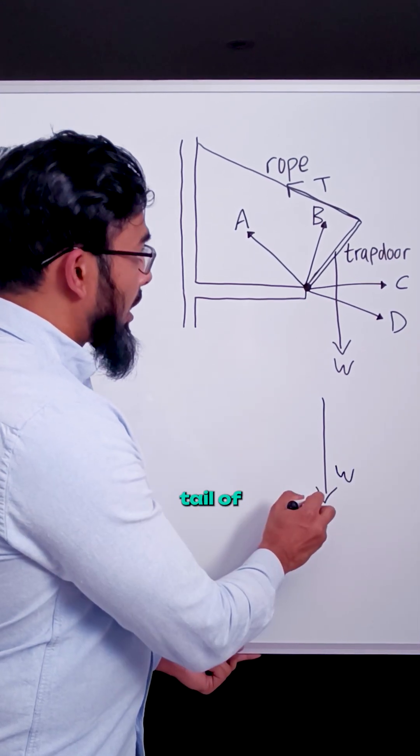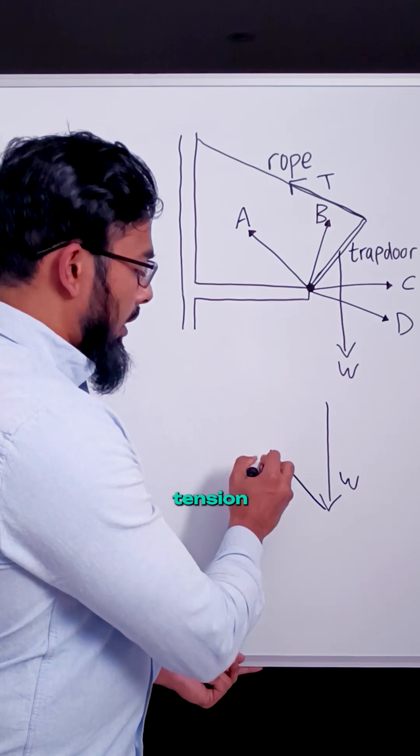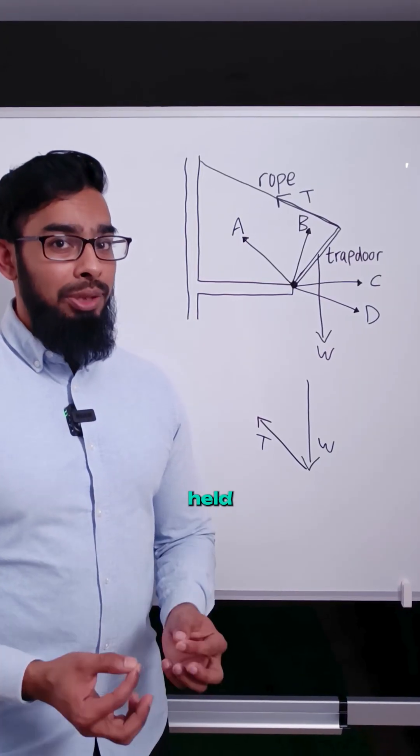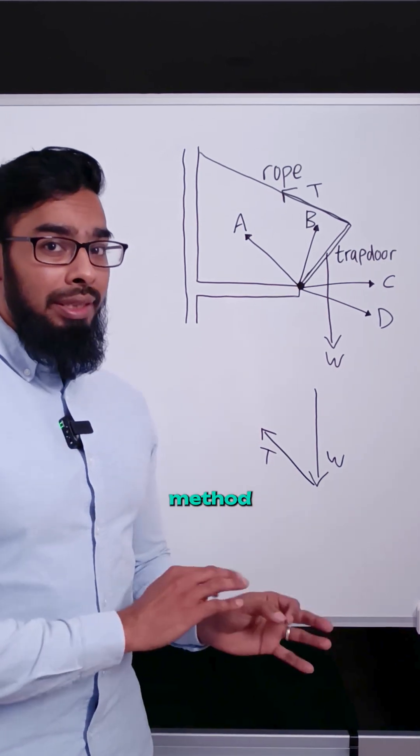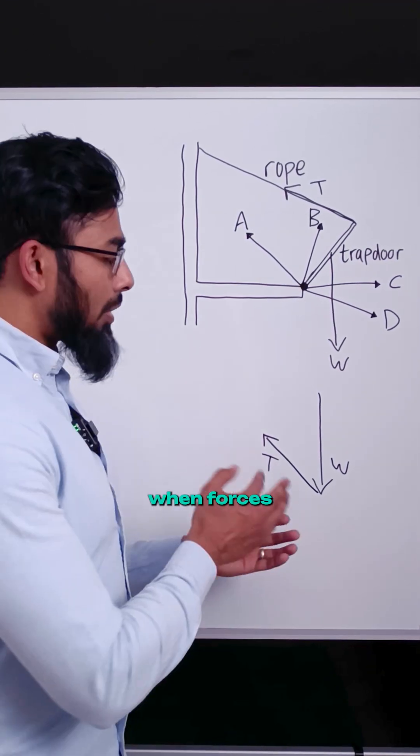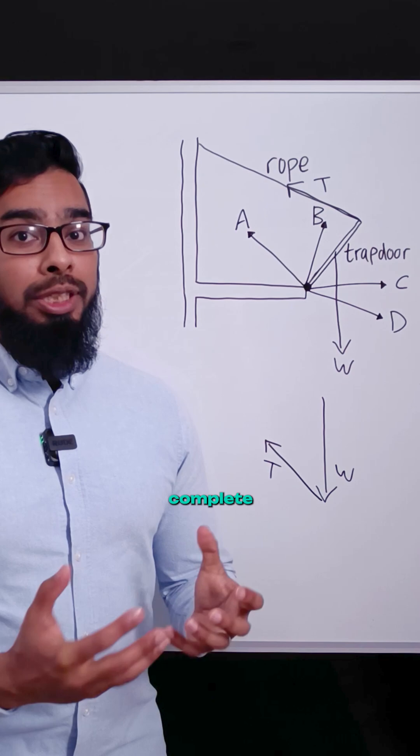So this is our weight force and the tail of the other force is from the rope, which is the tension force. Now going back to that keyword held, we said that means the trapdoor is in equilibrium. In the tip-to-tail method, the application therefore is that when forces are drawn tip-to-tail, they should complete the shape.